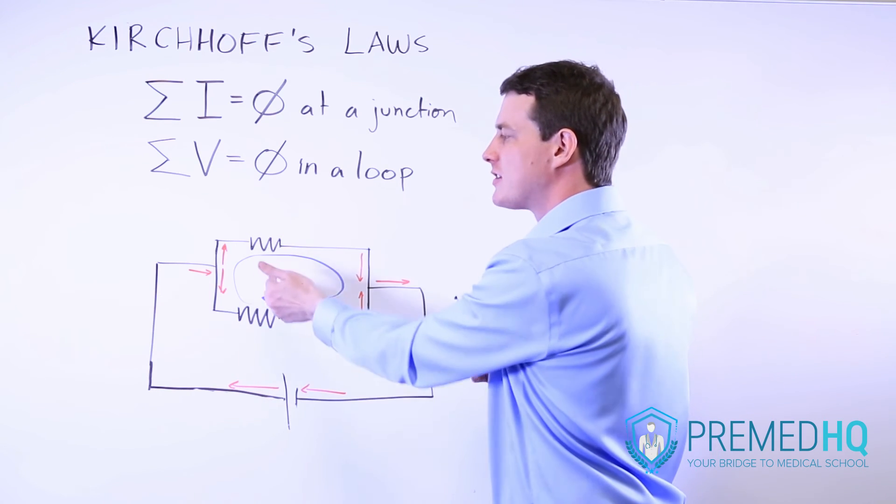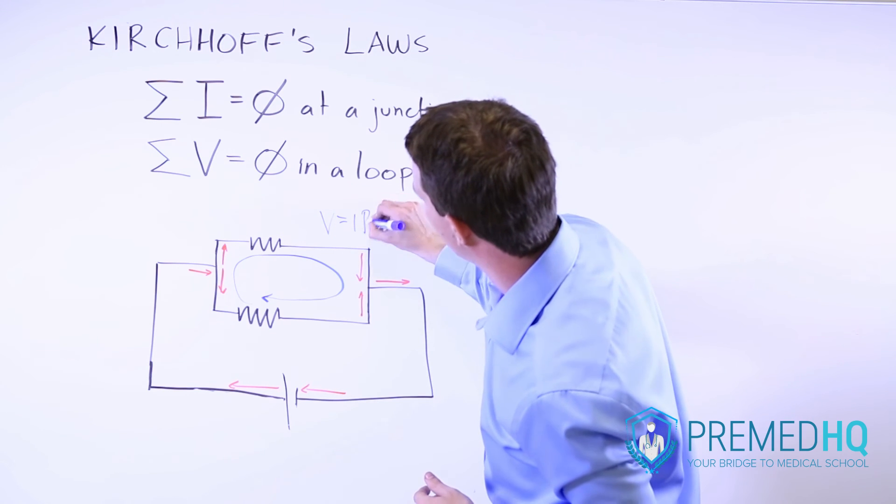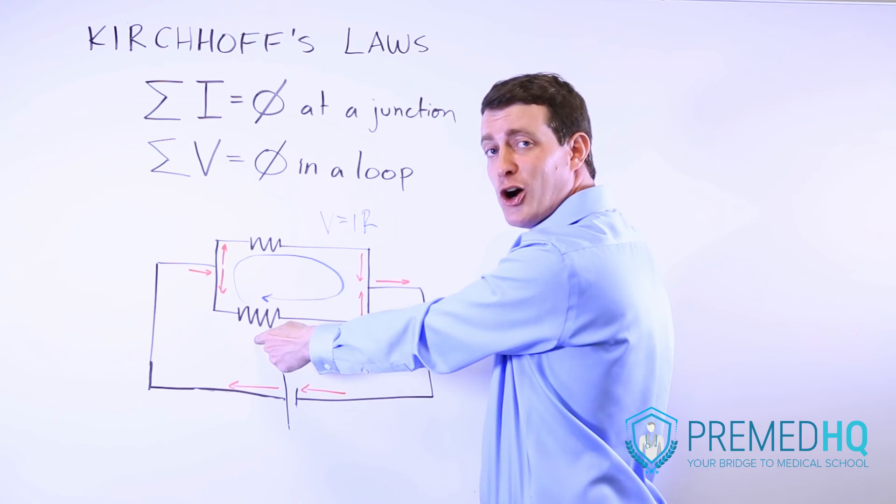...but if these are two different resistors, then the current will split such that V equals IR of this one is going to equal V equals IR of that one.